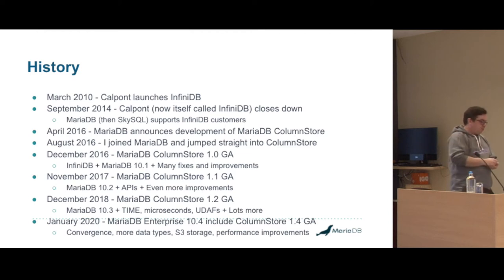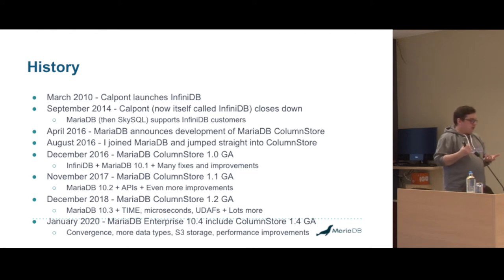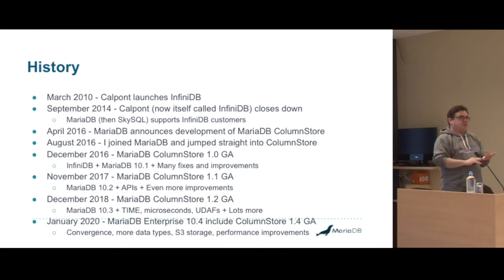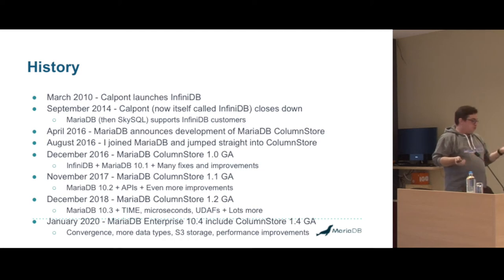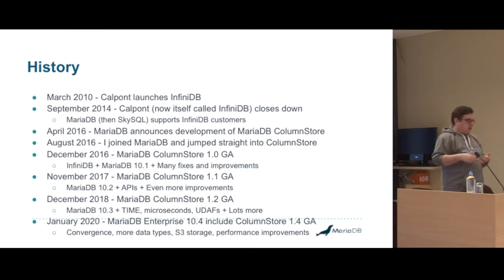I joined and jumped straight onto the ColumnStore project, starting as a senior engineer. In December 2016 we launched our first GA, which was InfiniDB on MariaDB 10.1 with lots of bug fixes and improvements. In 10.2 we had MariaDB ColumnStore 1.1 with APIs for bulk writing — C, Python, Java, and a few other things directly into ColumnStore. Then our 1.2 release was massive — it used MariaDB 10.3, we had the time data type which we'd never had before, microsecond support, and window analytical functions.